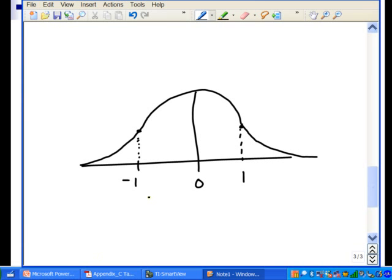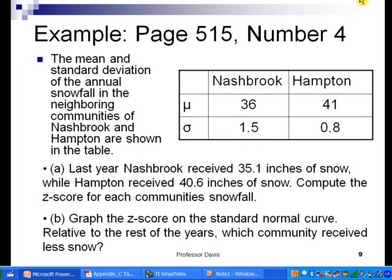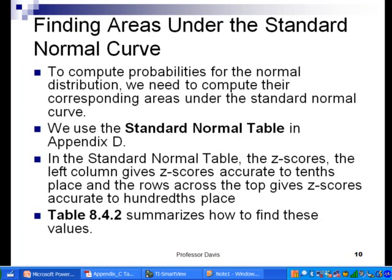So this would be negative one and this would be one right here. That's how we always know when we graph these things. For Nashbrook, the z-score was negative 0.6. And then for Hampton it was negative 0.5 right there. When you compare the two relative to the other years, Nashbrook had less snow as compared to Hampton, because we're standardizing this with the mean and the standard deviation.